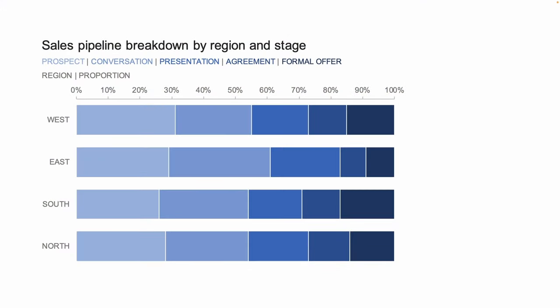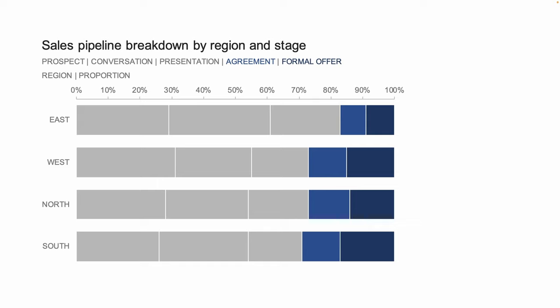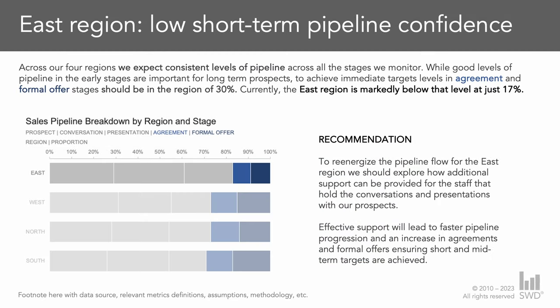Now that you have a clear visual and an accompanying message, you need to take steps to turn it into a communication that will make the focus unavoidable and the action to management clear. For the explanatory visual, you'll want to direct your audience's attention to those two final pipeline stages, with an emphasis on the east region. To begin with, remove the colour from the earlier stages of the pipeline, retaining just the key colours for the agreement and formal offer sections. Then reorder the bars so that east is at the top where it will be most prominent, then visually fade out the other three regions with slight transparency or less intense colours. You could call for a surge of sales support in the east to help tackle the backlog at the conversation and presentation stages.